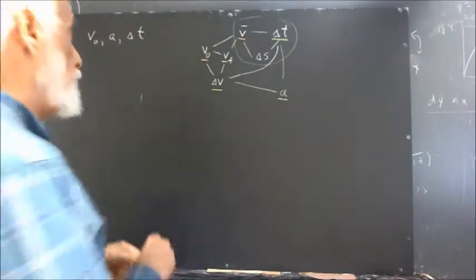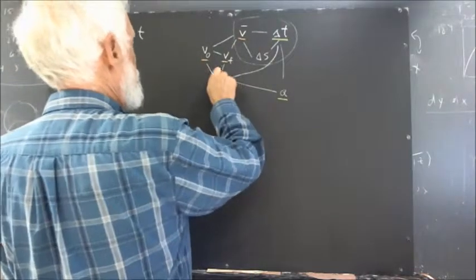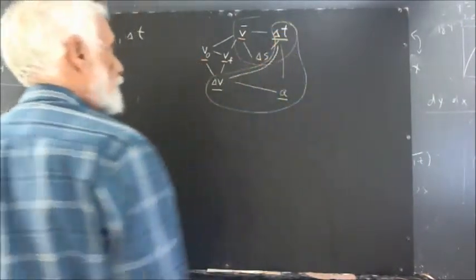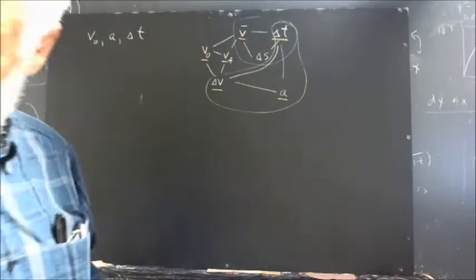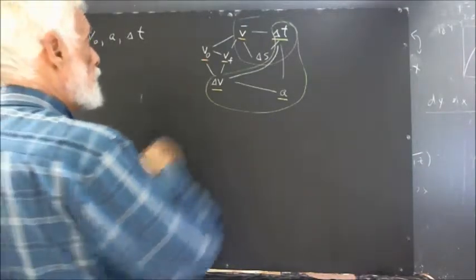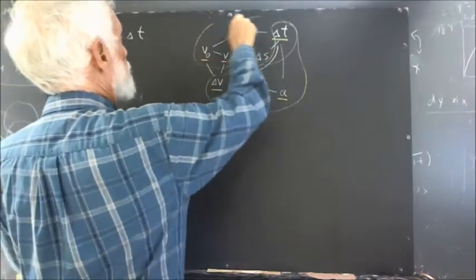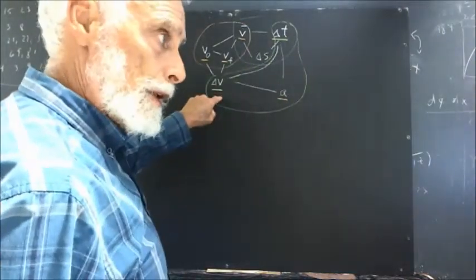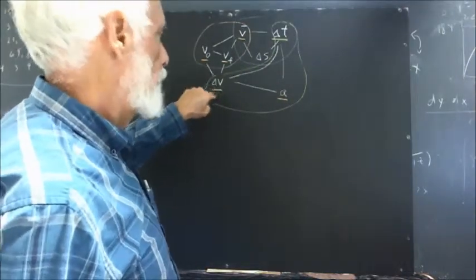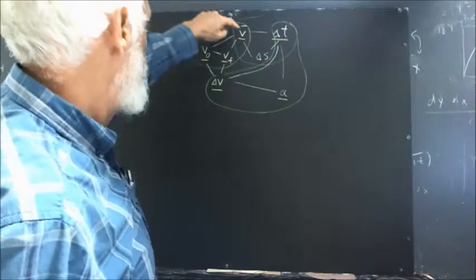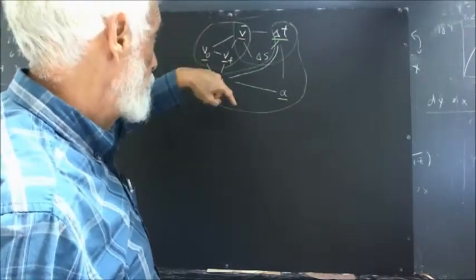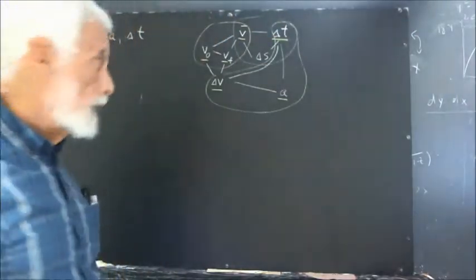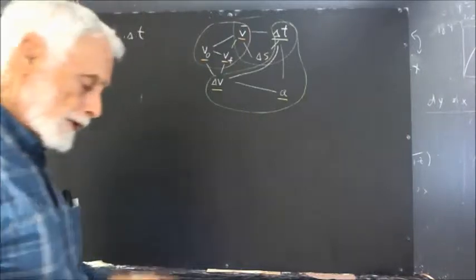And then I've got the delta V, A, and delta T triangle here. And I've got the V bar, V naught, VF triangle here. Using green to indicate the quantities in the delta V, A, delta T triangle; orange for the V bar, V naught, VF triangle; and white for the V bar, delta S, delta T with no underlines corresponding to those triangles.